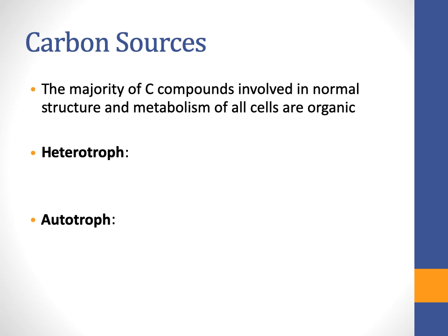As far as a carbon source, organisms can get carbon in two different forms. They can be heterotrophic or autotrophic. Autotrophs — 'auto' meaning self — are able to metabolize carbon sources on their own, so photosynthetic organisms can do that. Heterotrophs rely on other organisms to give them a carbon source, so they have to eat or consume other organisms or products of other organisms to get carbons to rearrange and make macromolecules.